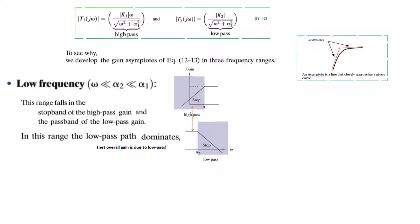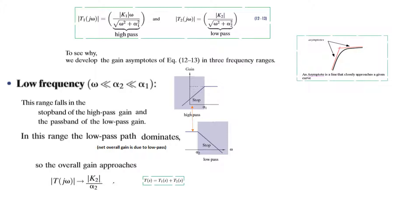Since ω << α2 and α1, α2 is much greater than ω, so ω can be neglected under the square root and √(α2²) becomes α2. Therefore, the overall gain T(jω) is dominated by the low pass term and equals k2 over α2. This is the gain at low frequency.